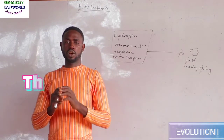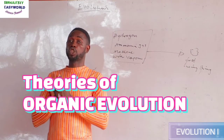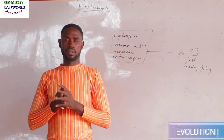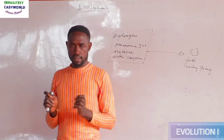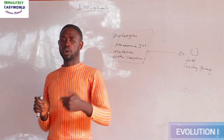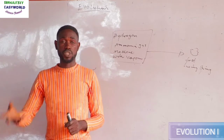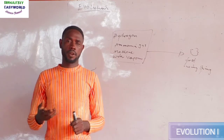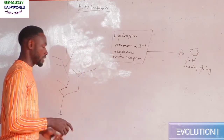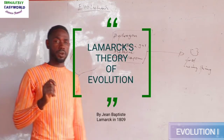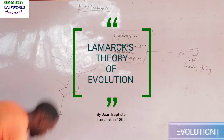Now let us look at the popular evolutionary theories in biology. The most popular is that of Charles Darwin, but he wasn't the first to attempt disproving special creation. The first theory I am going to take a look at is Lamarck's theory of organic evolution — Jean-Baptiste Lamarck's theory of organic evolution.